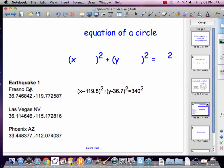So that's how you figure it out. You've got x minus, and then it's a negative 119, so that's actually going to become a plus. Don't worry about that. You can put minus minus. It works. And then y minus the 36.7, and then equals the radius squared, and it's 340. We've got to do it for those two.